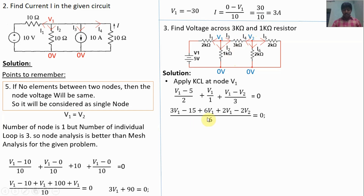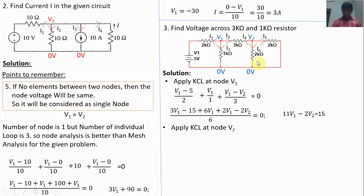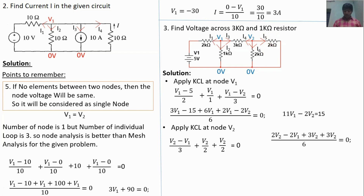Simplifying the node V1 equation by taking LCM of 6: 3(V1 minus 5) plus 6V1 plus 2(V1 minus V2) equals 0, giving 11V1 minus 2V2 equals 15. Applying KCL at node V2: I4 equals (V2 minus V1)/3kΩ, because current I4 flows from V2 to V1. So (V2 minus V1)/3kΩ plus V2/2kΩ plus V2/2kΩ equals 0, simplifying to minus 2V1 plus 8V2 equals 0.